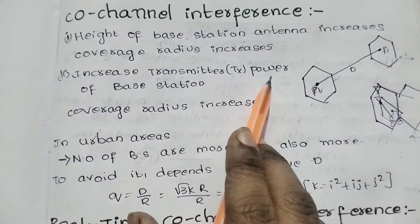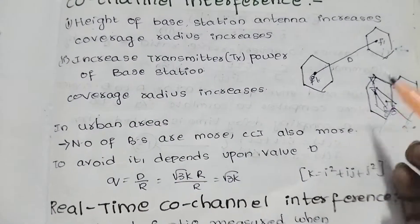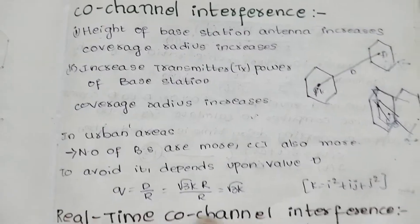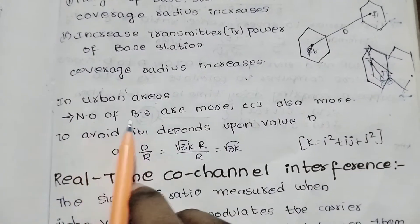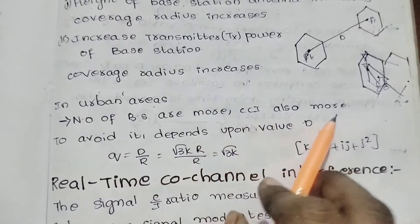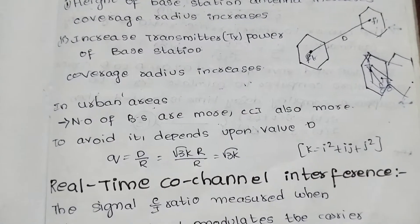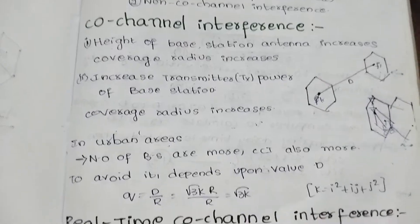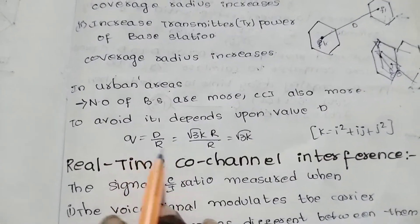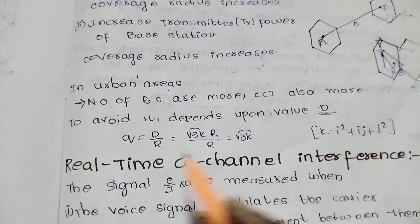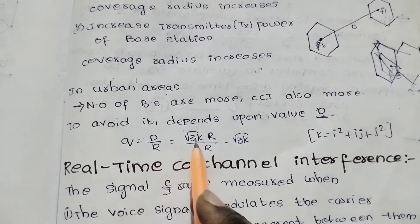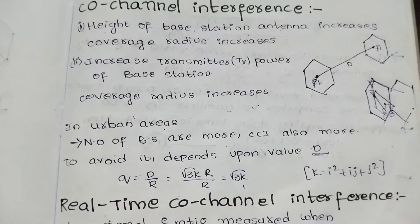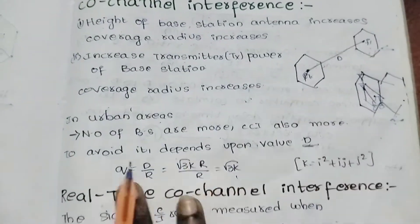When we increase the TX power of the base station, the transmitter power increases, the coverage radius increases, and the co-channel interference also increases. In urban areas, the number of base stations is more, so CCI is also more. When base stations are more than one, the co-channel interference is greater.